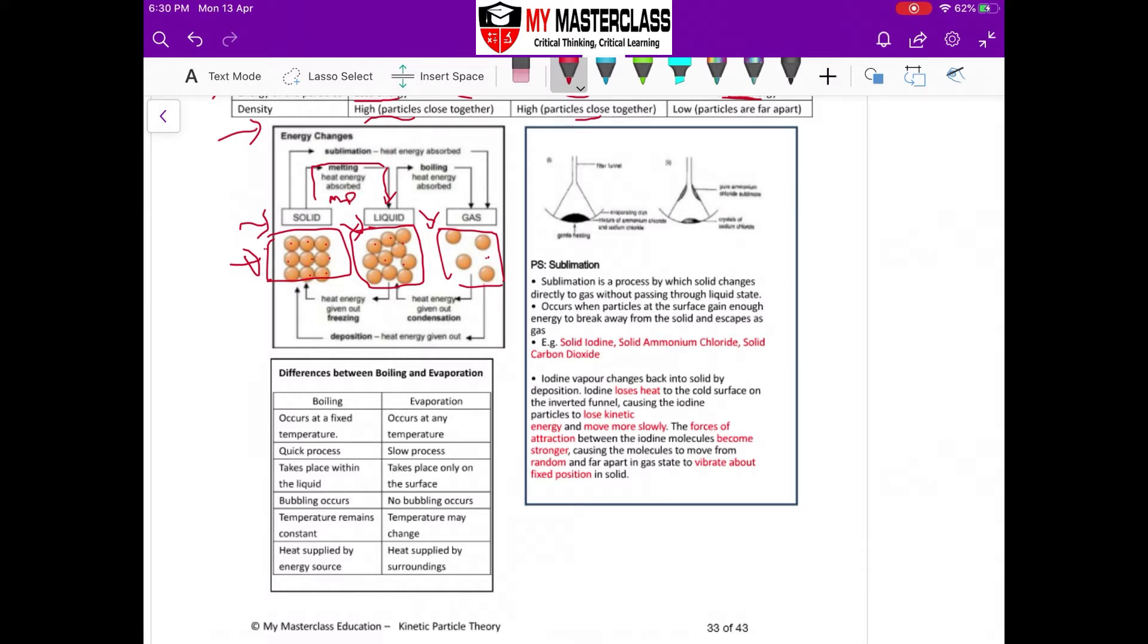When your liquid changes to gas, this is your boiling point. For example, if you use water or ice as an example, solid is zero degrees Celsius, liquid maybe 25, and then gas is more than 100 degrees Celsius.